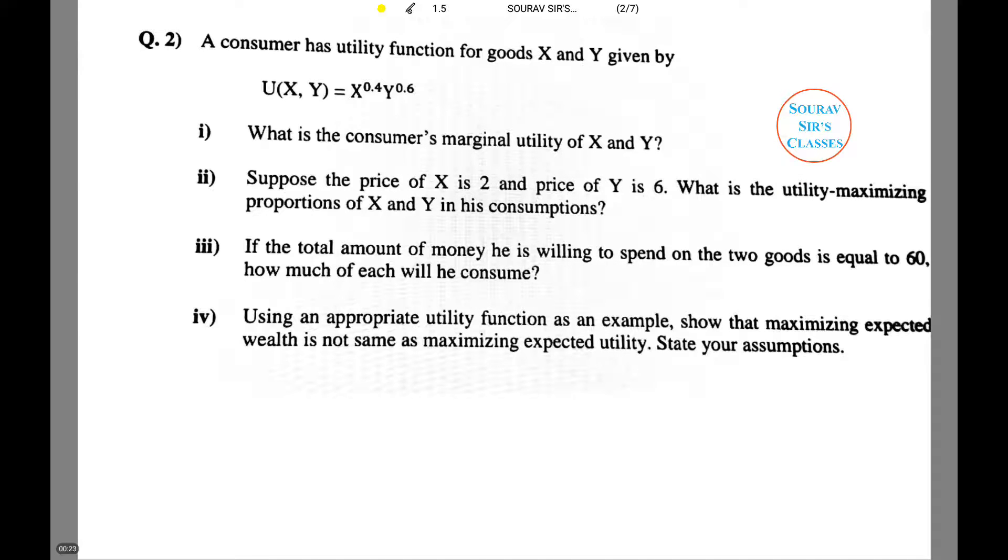A consumer has a utility function for goods X and Y given by U(X,Y) equals X to the power 0.4 times Y to the power 0.6. What is the consumer's marginal utility of X and Y? Let us first solve this question.